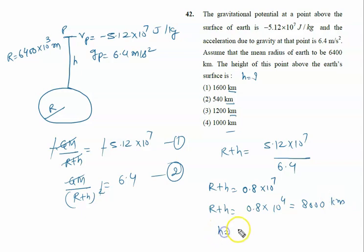Now h is given by 8000 kilometers minus r. r is 6400, so we calculate 8000 minus 6400, which gives us 1600 kilometers.